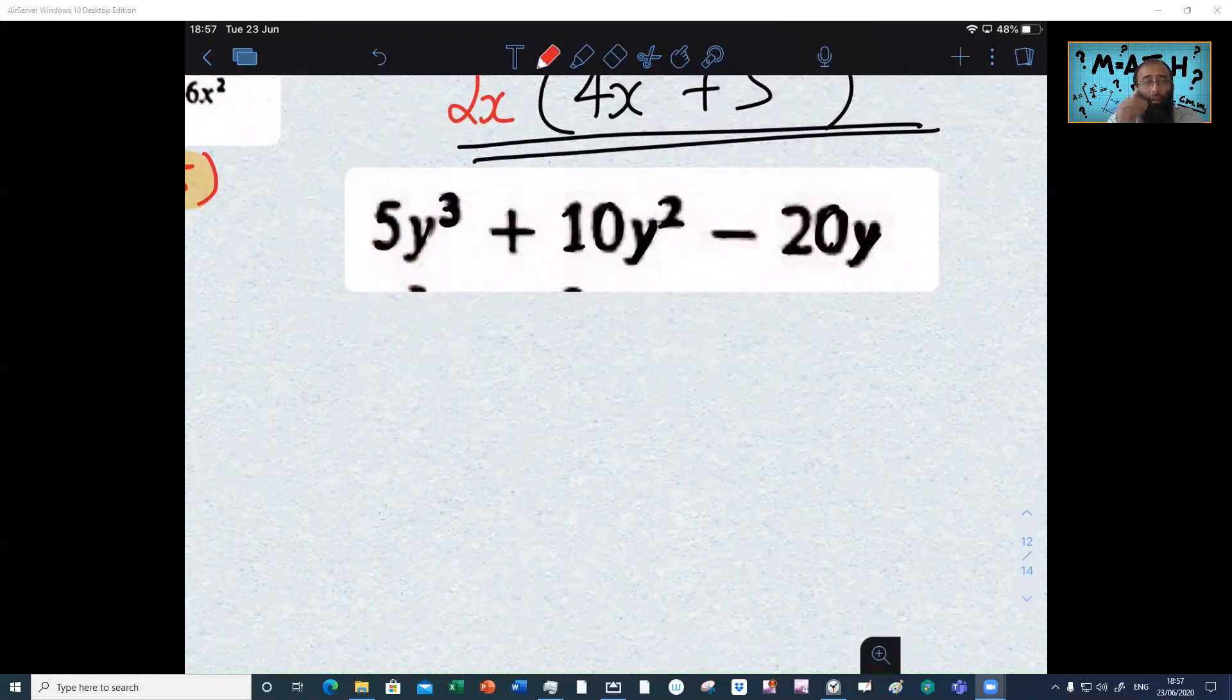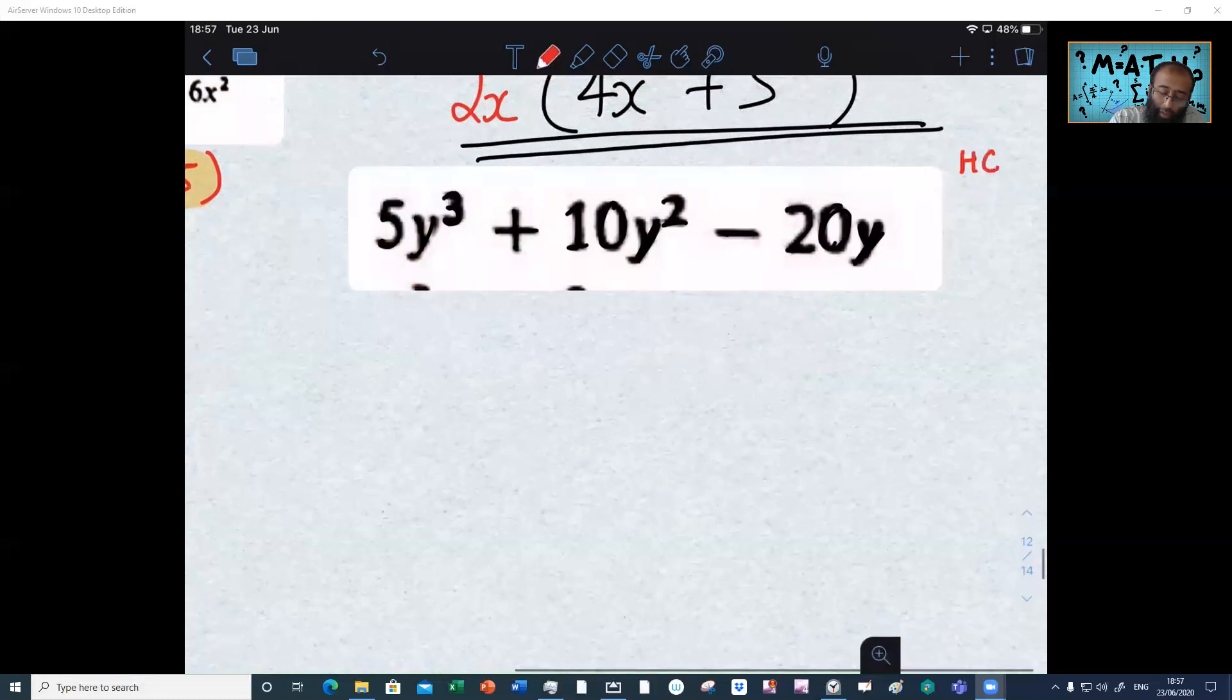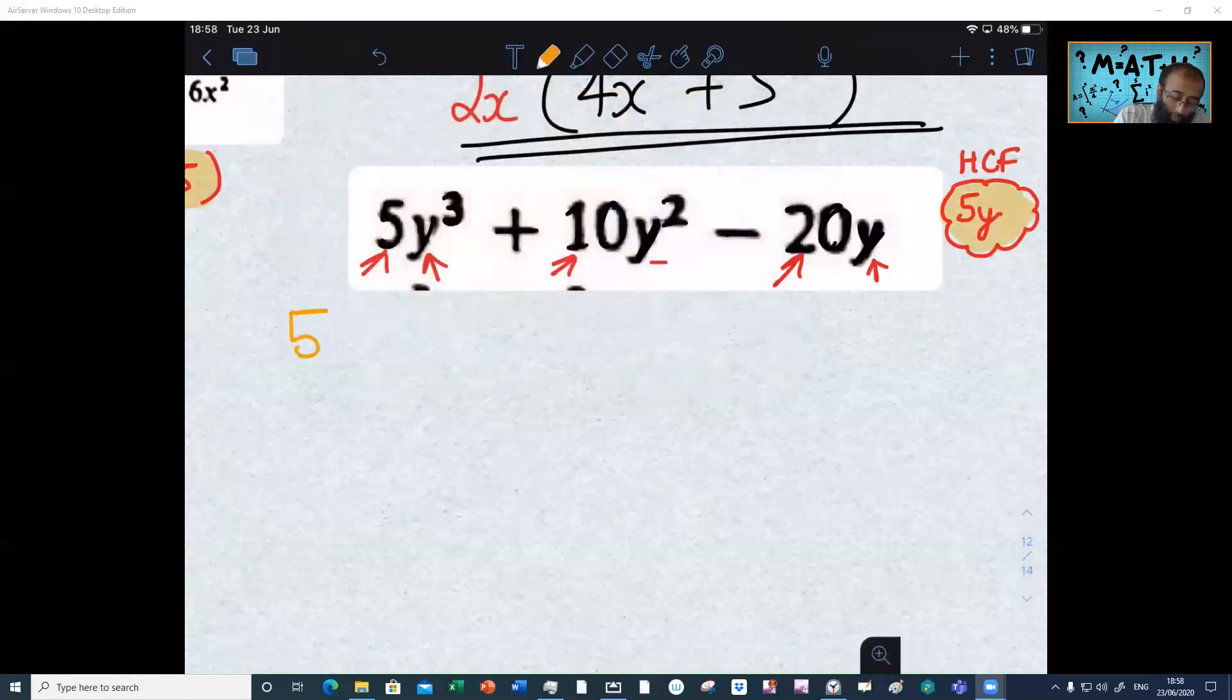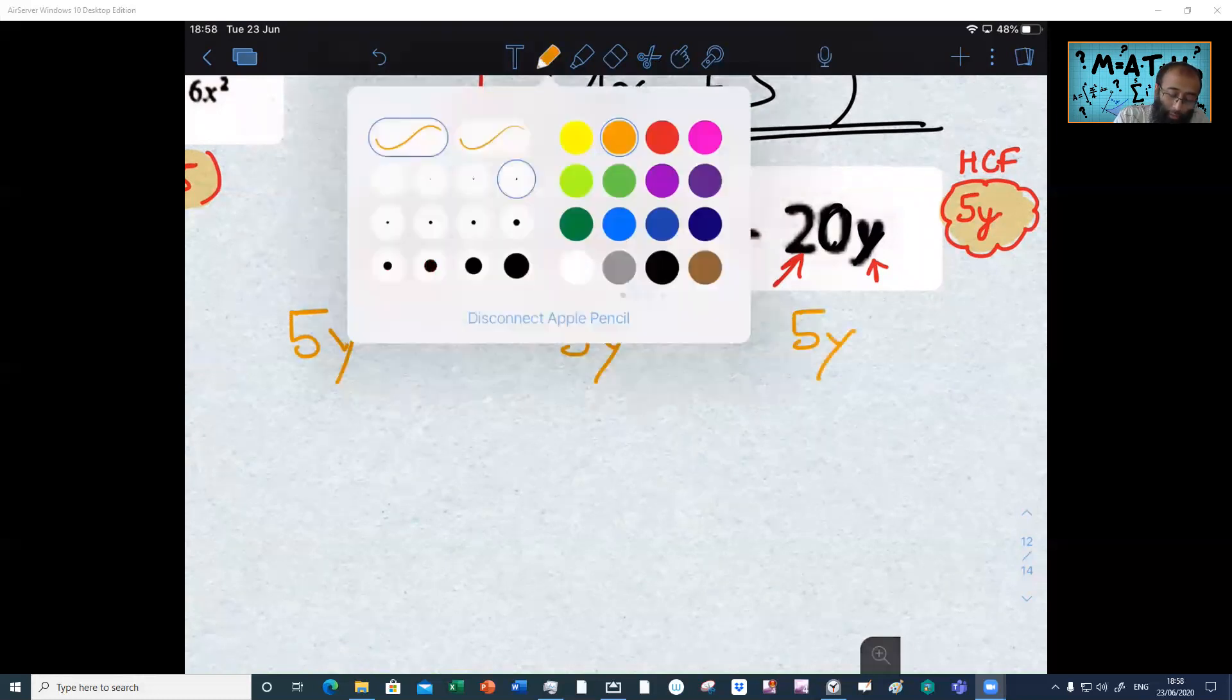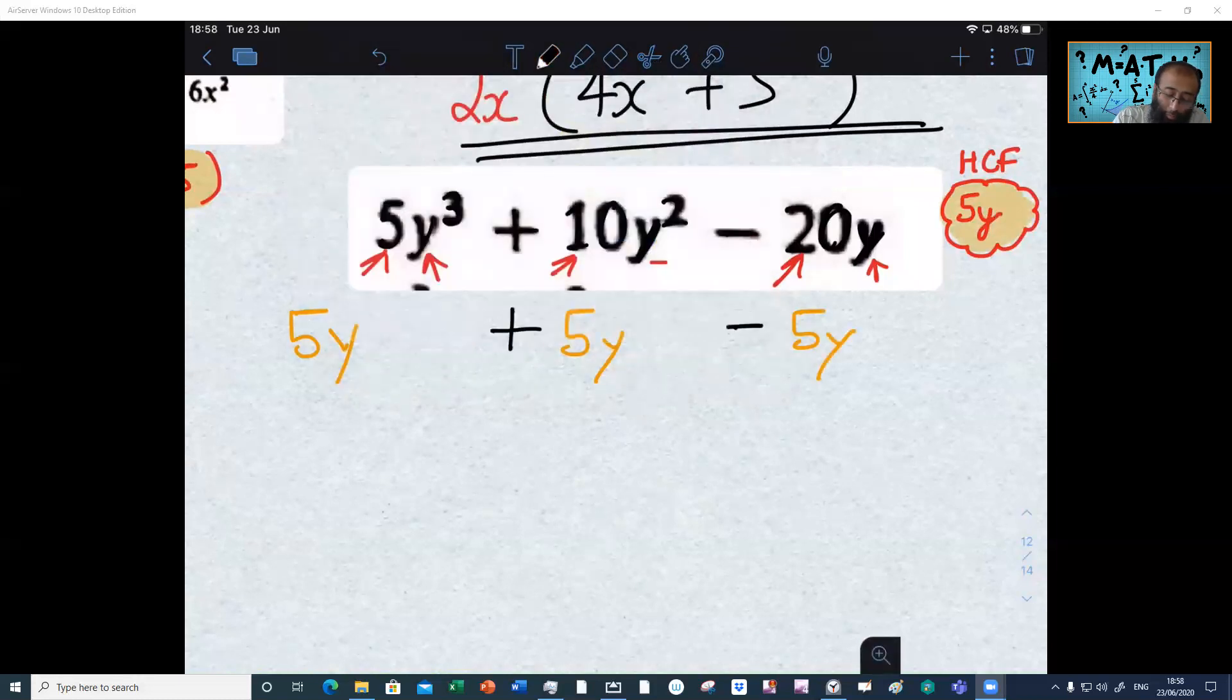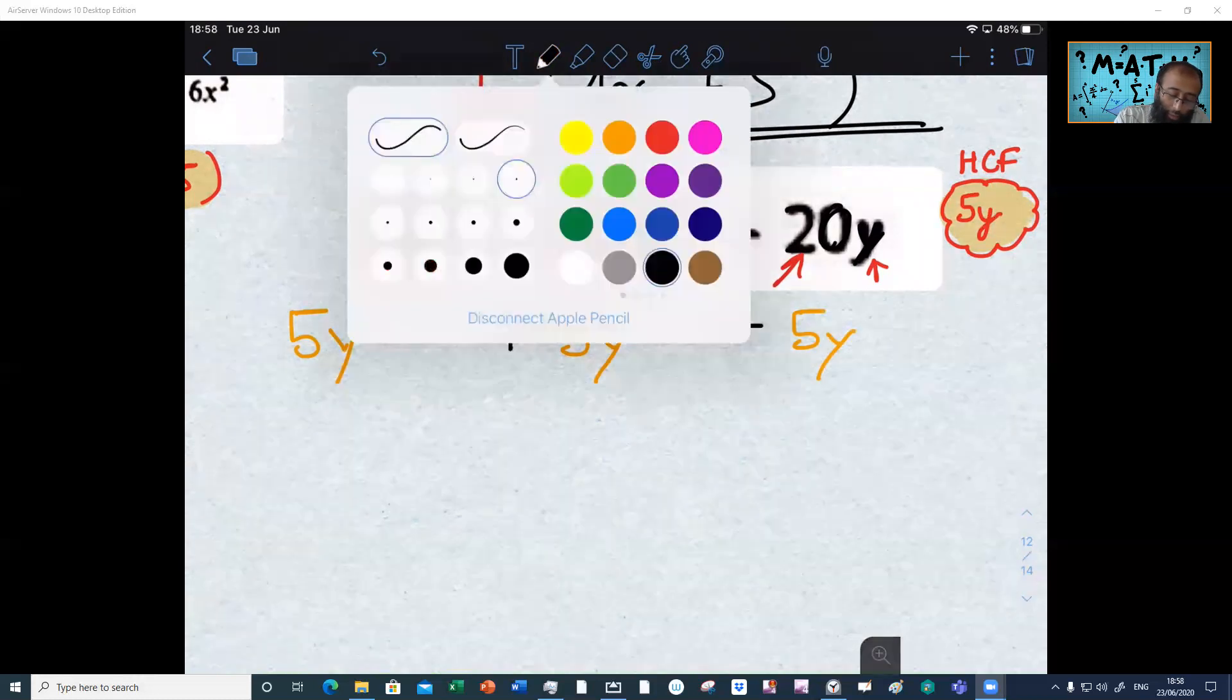So again, we need to identify what factors they all share, each component. We've got three parts of that. So one of the highest common factors. So we have a 5 in here. We have a 5 inside here and a 5 inside here. So one of the components is a 5, but we also got a bit more. What's the next part? Because y is in all of them, so you're taking y out of all of them. So the highest common factor is 5y.